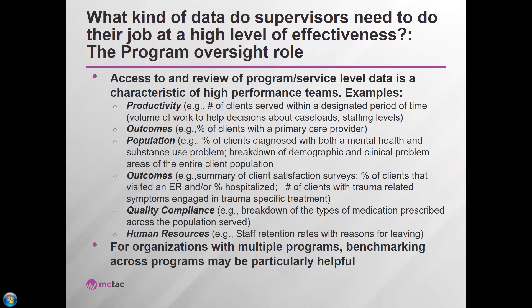Data used by supervisors — what the agency needs to monitor. Here's an example of productivity; that's an important piece in the matrix. What a supervisor needs to monitor for each supervisee: if the team leader doesn't attend to agency-wide and supervisee-specific performance, it communicates that it doesn't really matter. It really becomes difficult to hold people accountable if you don't have direct data. At the program oversight role, access to and review of certain data — productivity, outcomes, understanding our population, quality compliance, and human resources. For organizing multiple programs, you can also look at benchmarking.